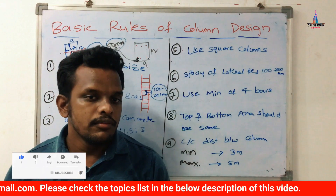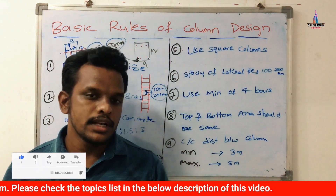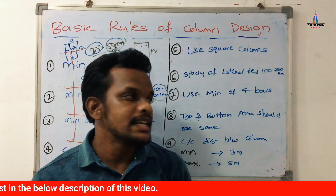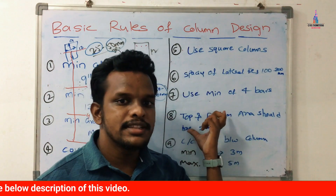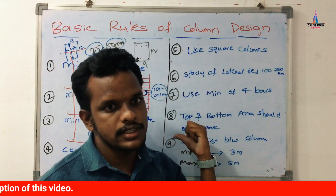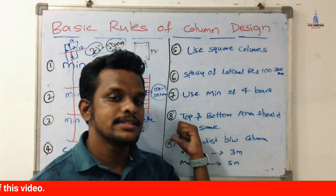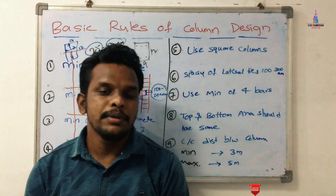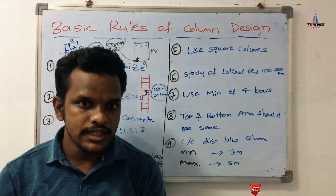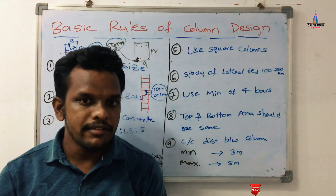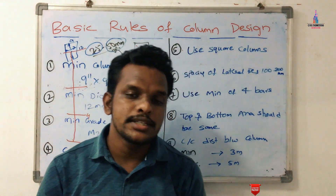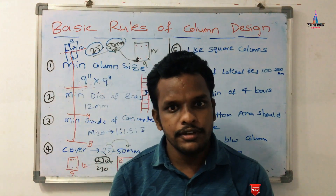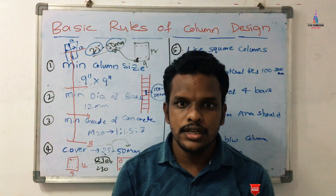If you design any building section such as G plus 2 or G plus 3, you have to compare results using these nine key points. This is the complete process of basic rules in column design. If you have any queries about this video, please text your questions in the comment box below and I will try to answer them. Thank you.